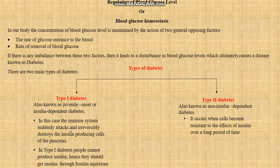There are basically two main types of diabetes: type 1 and type 2. Type 1 diabetes is also known as juvenile onset or insulin-dependent diabetes, which starts at a very early age. In type 1 diabetes, the immune system attacks and irreversibly destroys the insulin-producing cells of the pancreas, so people cannot produce insulin and must get it through injections. In type 2 diabetes, the cells become resistant to the effect of insulin over a long period of time, so the patient has to take medicines.